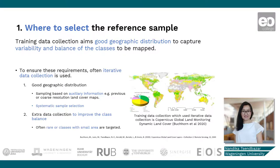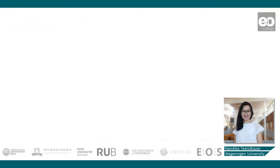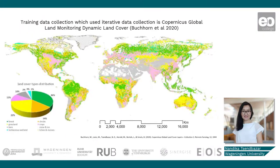As an example, we have here the training data locations used for producing the Copernicus Global Land Cover product. The training data was collected iteratively, focusing on systematic sample selection for good geographic distribution and focusing on rare classes for class balance.